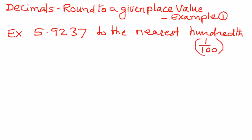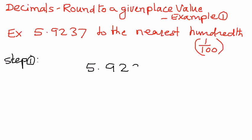So we will break it down into different steps, and then follow these steps to solve this problem. Step number 1: write the given decimal number down — 5.9237. We want to round it to the nearest 100th place, so we need to locate where the 100th place is in this given number.